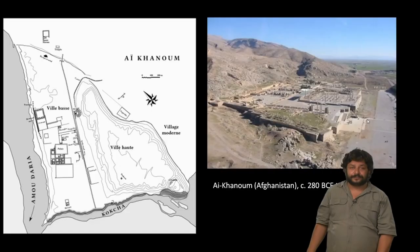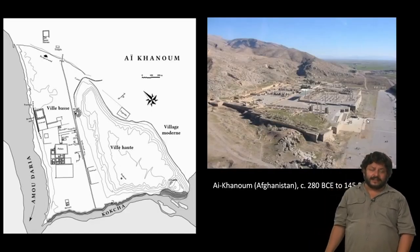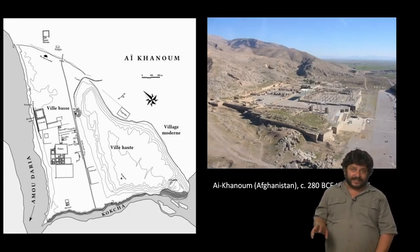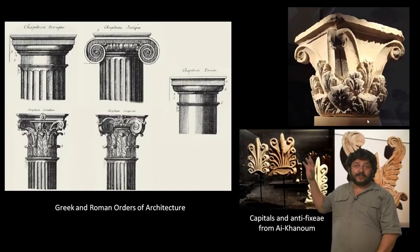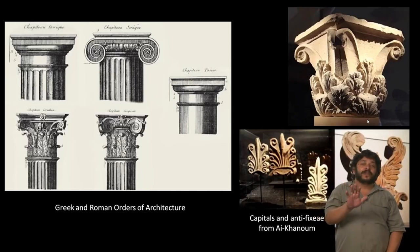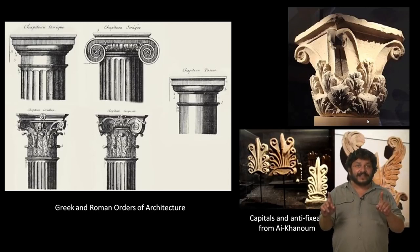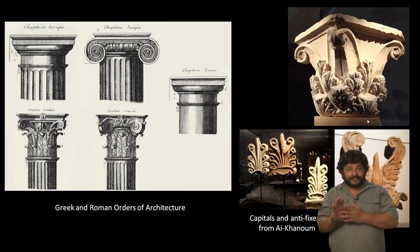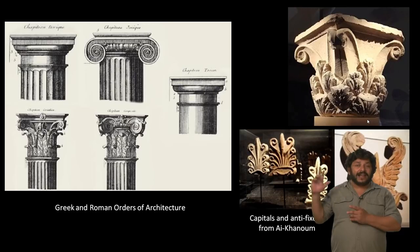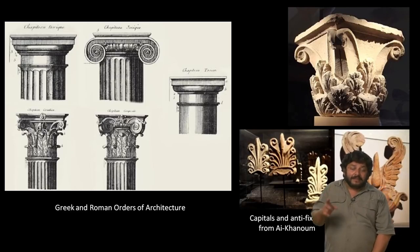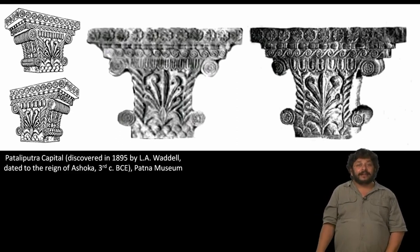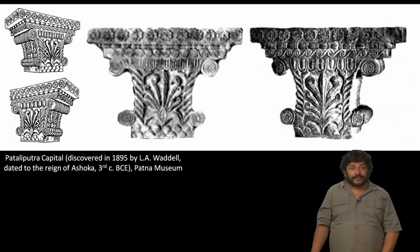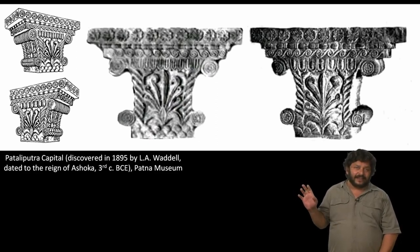At a site called Ai Khanoum in Afghanistan — one of these Hellenistic Bactrian Greek settlements — you find column capitals like those shown on the right. The standard orders of architecture in Greece and Rome are the Doric, Ionic, Corinthian, and sometimes Tuscan, but at Ai Khanoum there is local inventiveness with hybrid kinds of capitals and columns. The same kinds of capitals were excavated at Pataliputra in what was probably a Mauryan palace; these have been well published and reside in the Patna Museum now.